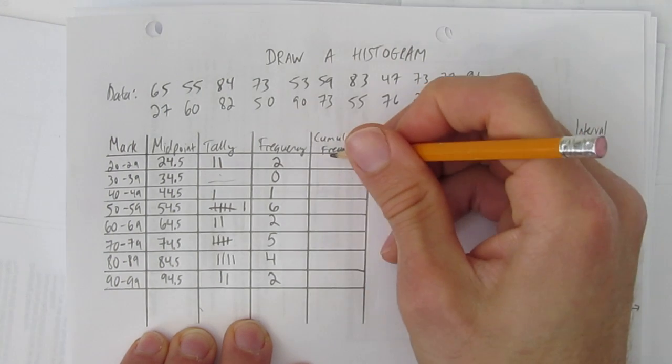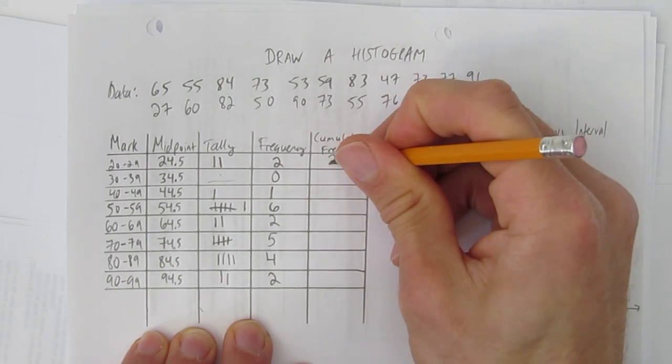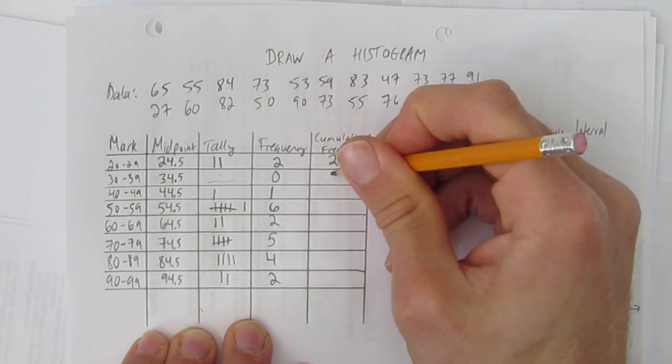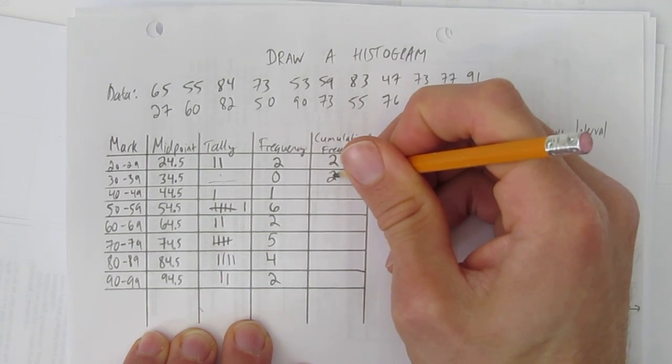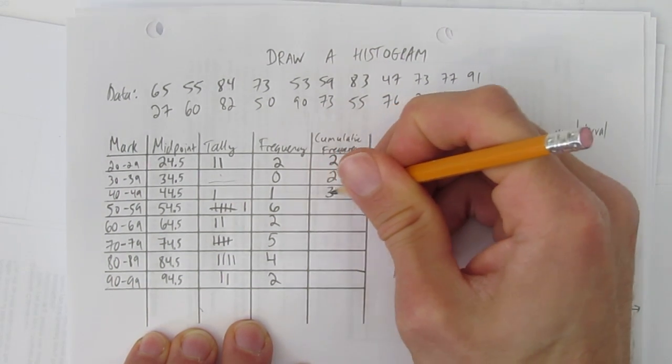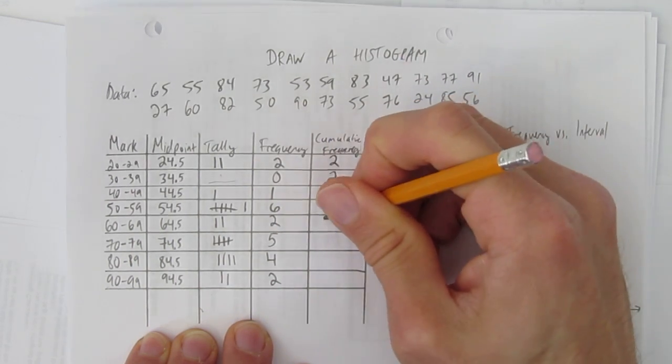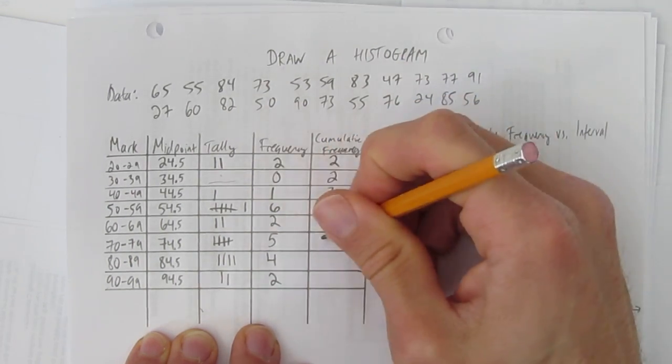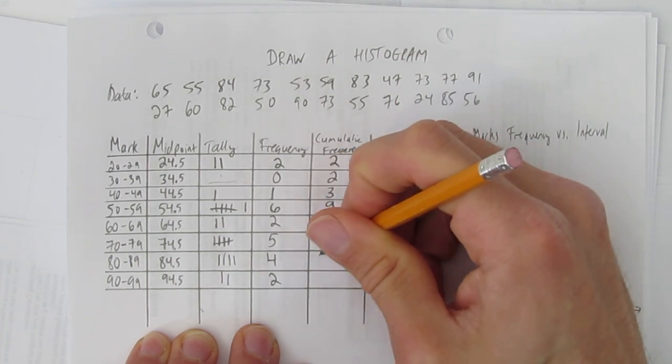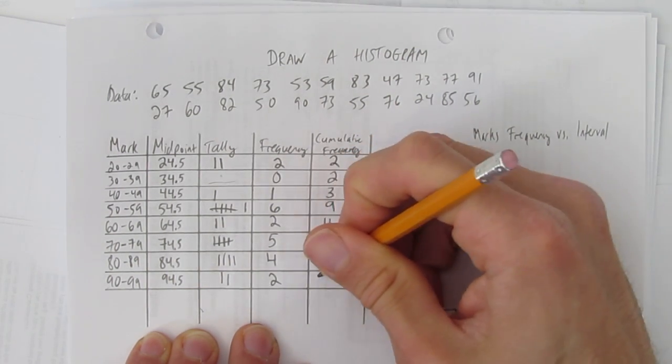So now cumulative frequency. Up until this point, I've seen two. And then two plus zero. Up until this point, I've seen two. And then two plus one. Up until this point, I've seen three. Three plus six. I've seen nine by here. And 11 by here. By here, 16. And up till here, 20. And up till here, 22.